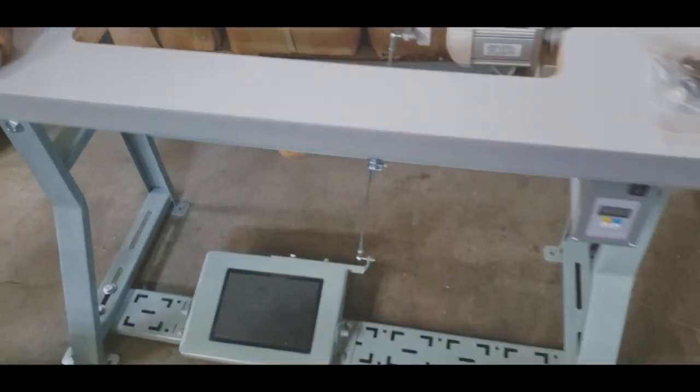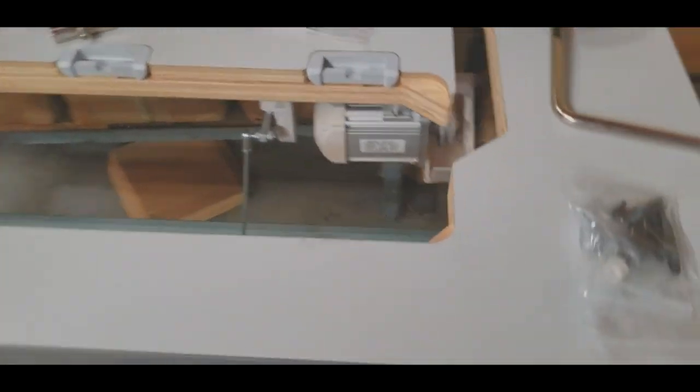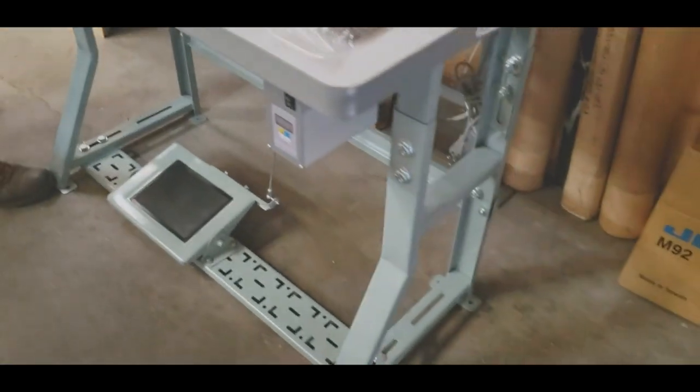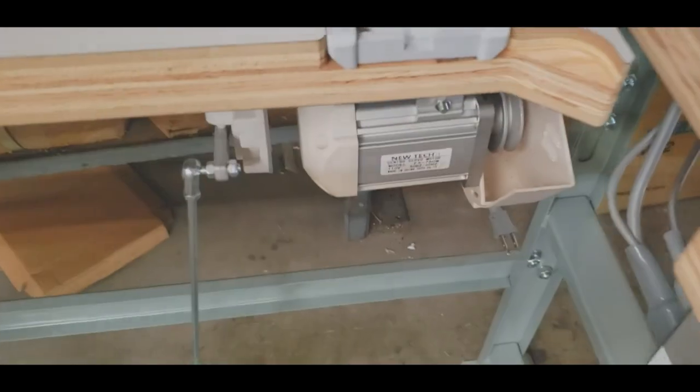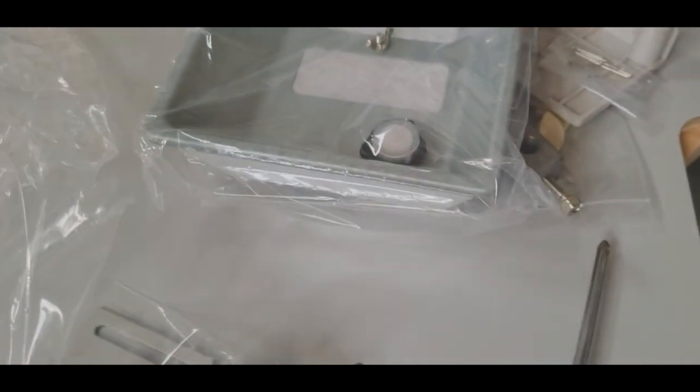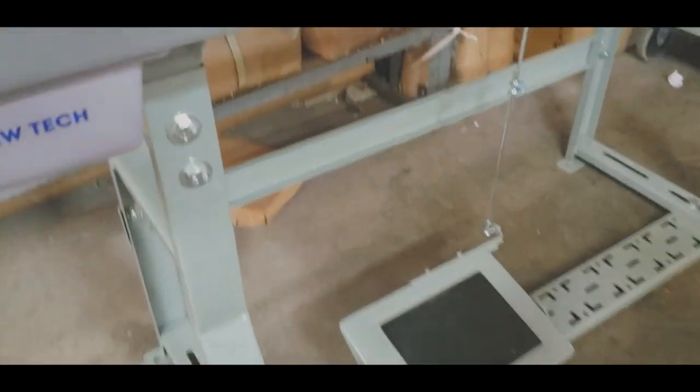As you see, the table, the K legs, the brushless motor, all the hinges are the same as a regular industrial sewing machine.